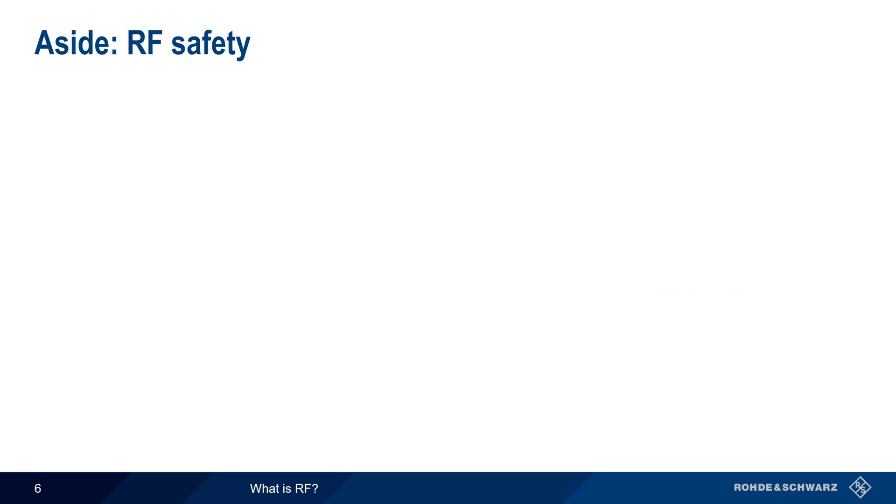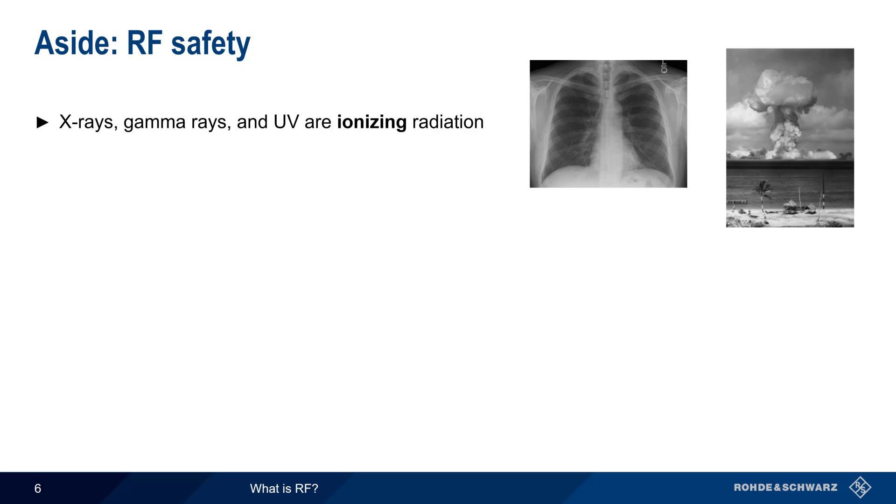At this point, it might be worth pausing to talk about RF safety. Some kinds of radiated energy, such as X-rays, gamma rays, and UV or ultraviolet rays, are so-called ionizing radiation. Ionizing means that this energy can break apart atoms or molecules, including DNA, and can be a direct cause of certain forms of cancer and other health issues.